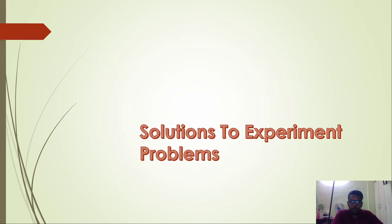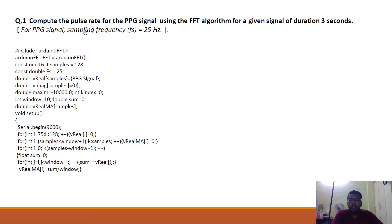Now we are going to see how to code this. First we are going to calculate the pulse rate of a PPG signal. The sampling frequency of the PPG signal is 25 Hz. For calculating the FFT we have to import a library called ArduinoFFT.h, which can be done by downloading the Arduino FFT library and extracting it into the Arduino environment. Then we call the ArduinoFFT function object, named as FFT, and initialize several variables. Vreal is going to store the signal as well as the real part of the FFT of the signal. Vimaginary is going to store the imaginary part of the FFT.